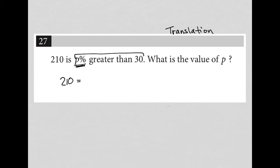So p% greater than 30 kind of means that I have 30, and then I have some p% that's greater than 30. So I'm going to add 30 times p over 100.